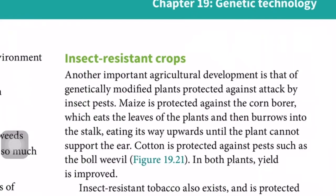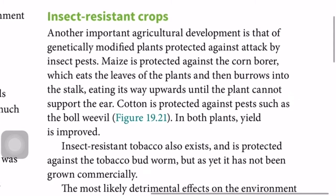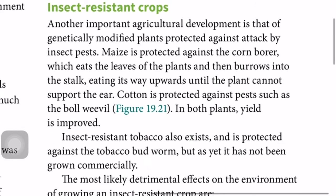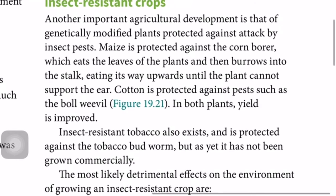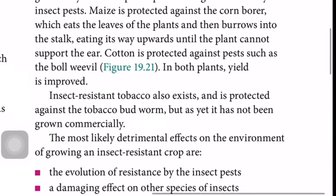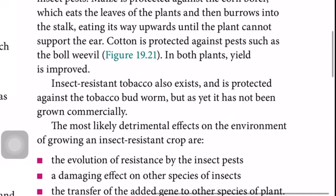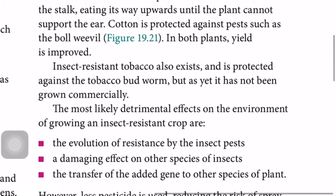Another important agricultural development is genetically modified plants protected against attack by insect pests. Maize is protected against the corn borer, which eats the leaves and then burrows into the stalk eating its way upward until the plant cannot support the ear. Cotton is protected against pests such as the boll weevil. In both plants, yield is improved.